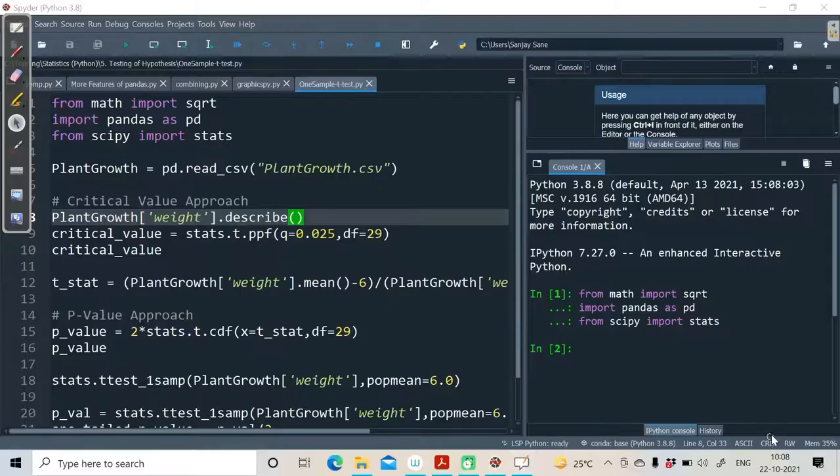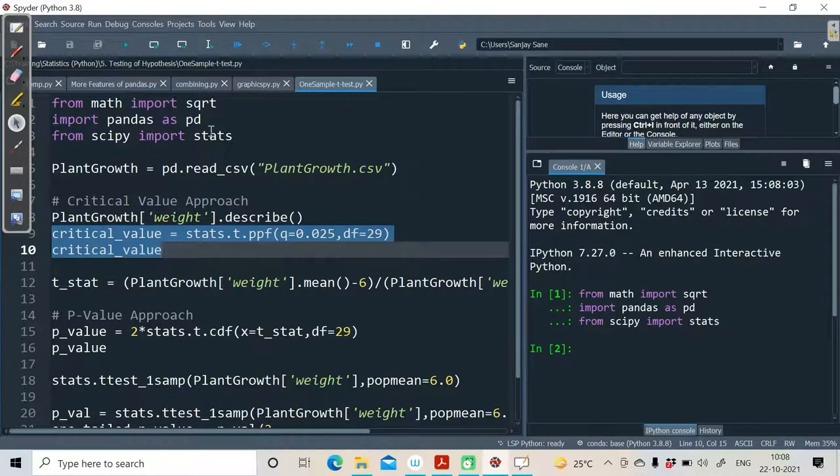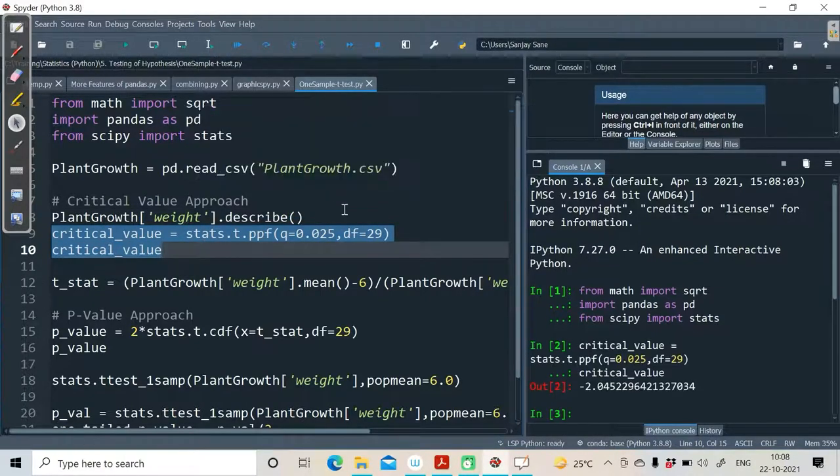Let's see that now. Considering our Python code, I am calling the function ppf from the module stats.t, and you will find that I am having a critical value calculated.